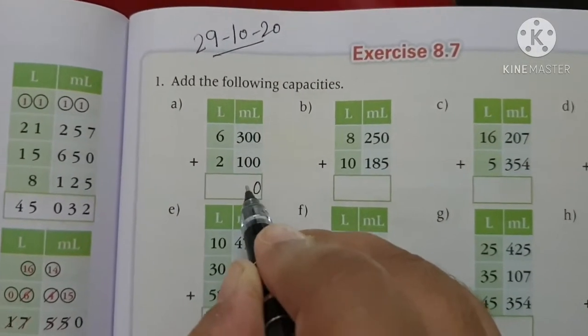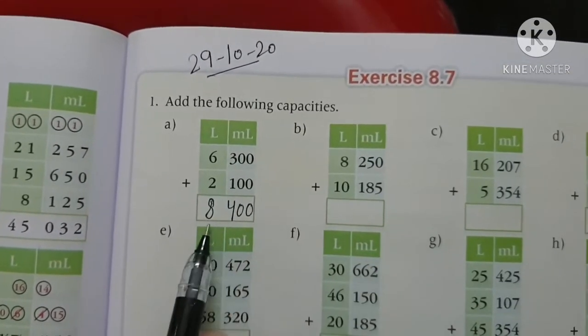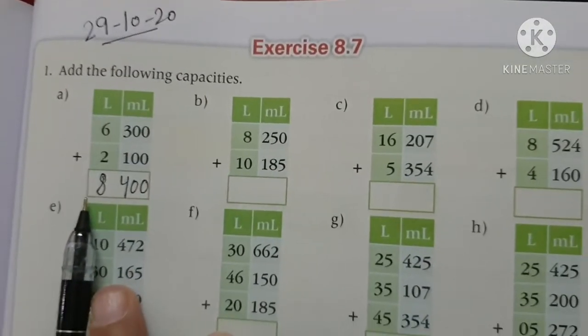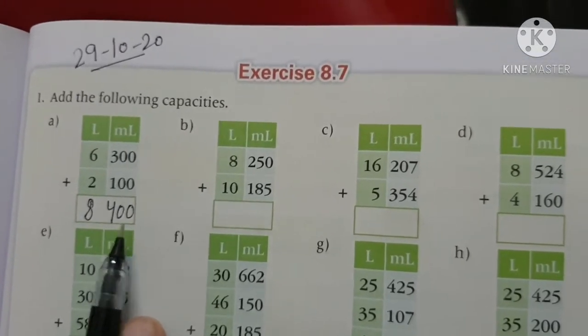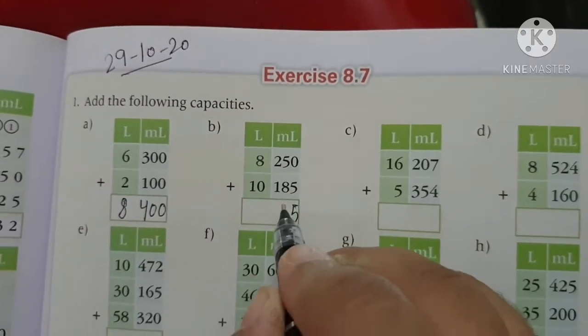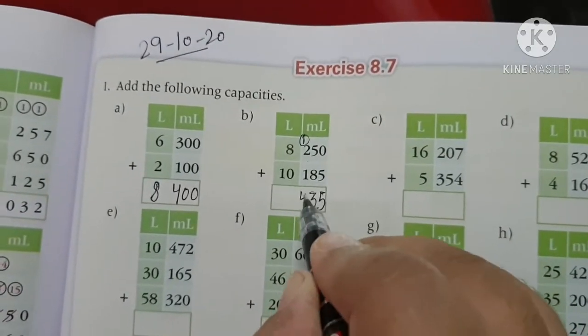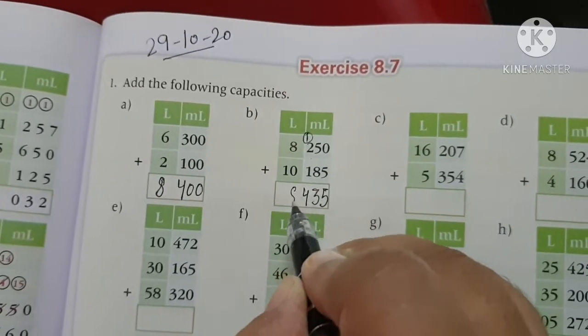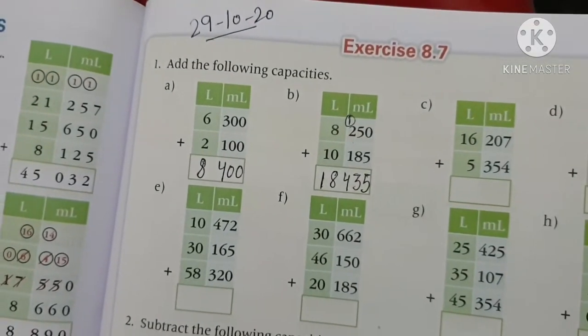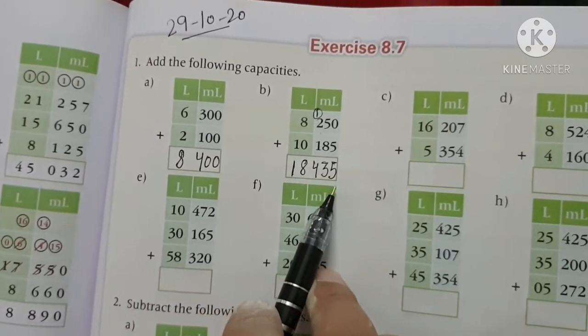So, first we will make squares. Here we have 8 litre, 400 milliliter. 8 litre, 400 milliliter. Our next sum is 0 and 5, 5. 8 and 5, 13. 3 here, 1 carry over here. 2, 1, 3 and 1, 4. 8, 0, 8. And 1, 18. 18 litre, 435 milliliter. The answer here is 18 litre, 435 milliliter.